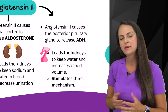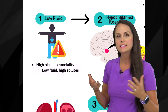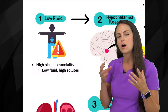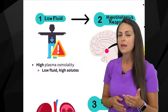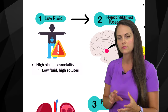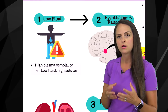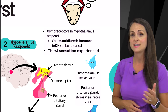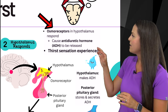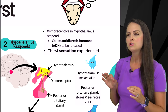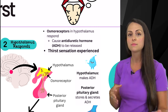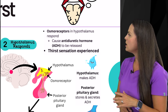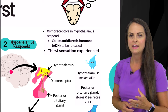Lastly, angiotensin 2 stimulates the thirst mechanism. Whenever this mechanism is triggered — again because of low fluid in the body — think about blood plasma osmolality. It's going to be high because there's a low amount of fluid but a lot of solutes. Whenever we have a high blood plasma osmolality, it's going to cause the hypothalamus to respond, particularly the osmoreceptors inside the hypothalamus, which are very sensitive to blood plasma osmolality.